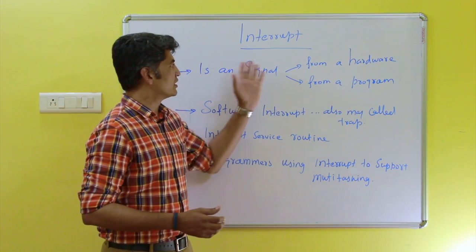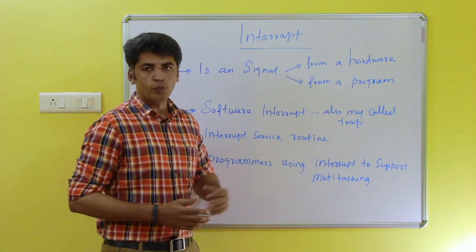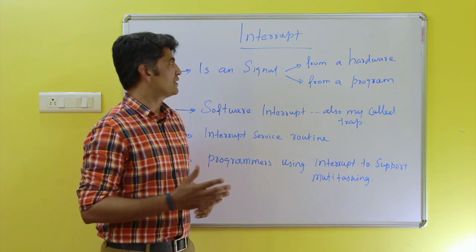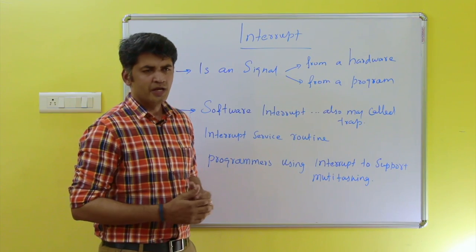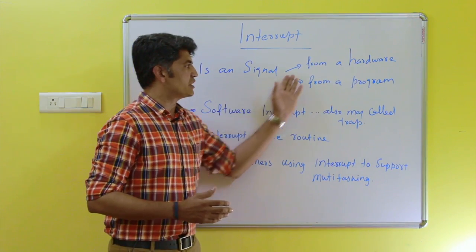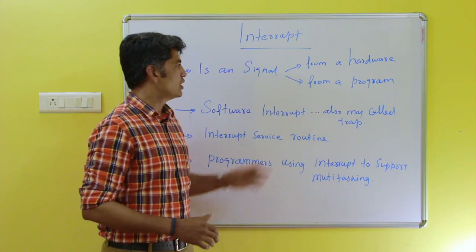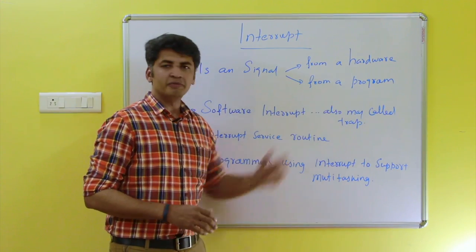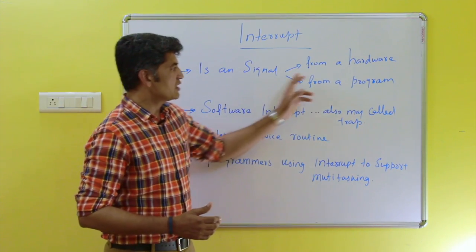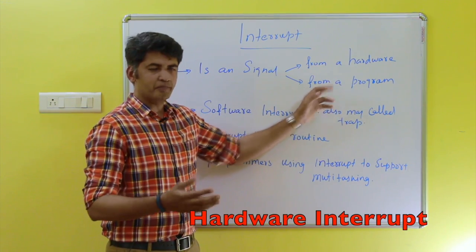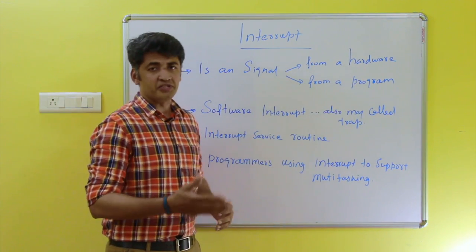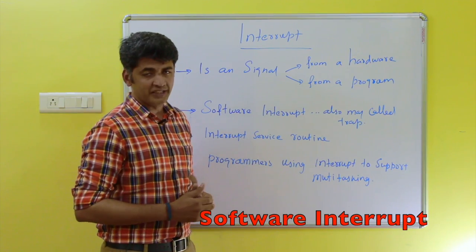Hi friends. In this video we are going to see what is an interrupt. Interrupt is one of the major topics in operating system concepts. Basically, an interrupt is a signal. The signal can be generated from hardware — which may be considered a hardware interrupt — or the signal can be generated from a particular system program execution, which may be considered a software interrupt.